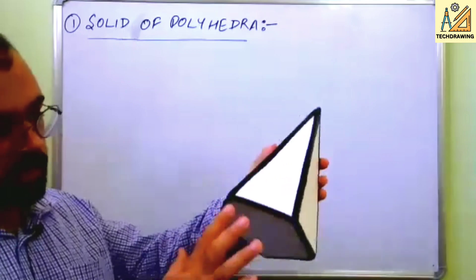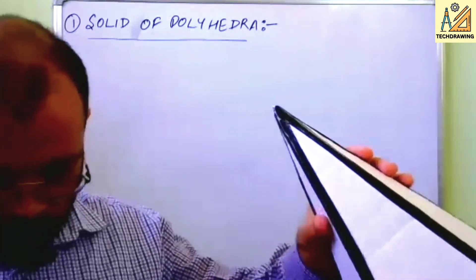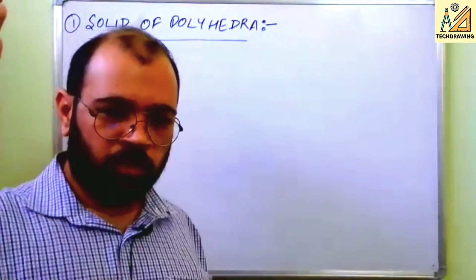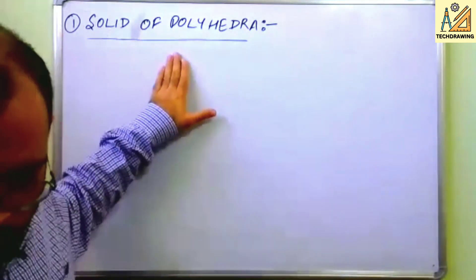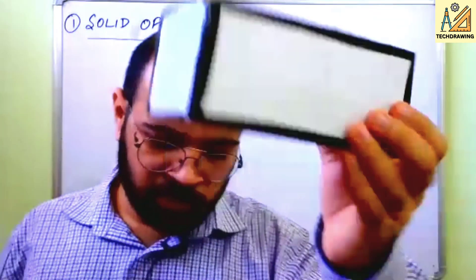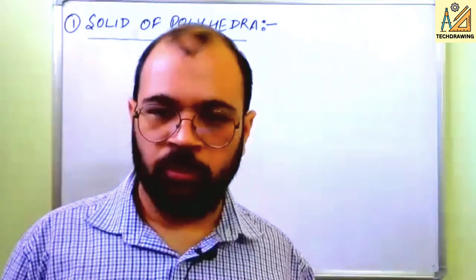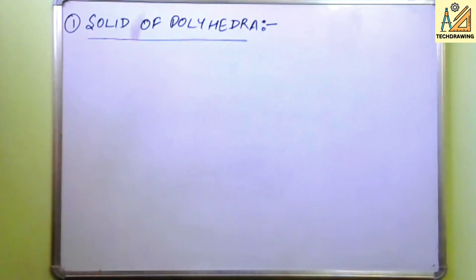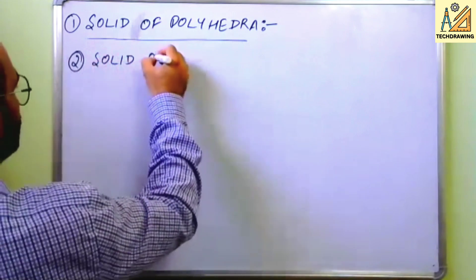Similarly, we have a pentagonal pyramid. Basically, any solid which has sides — both at the base and on the lateral surface — with defined edges and corners, is known as a solid of polyhedra. All the solids I just showed you — cube, square prism, pentagonal prism, pentagonal pyramid — are solids of polyhedra.